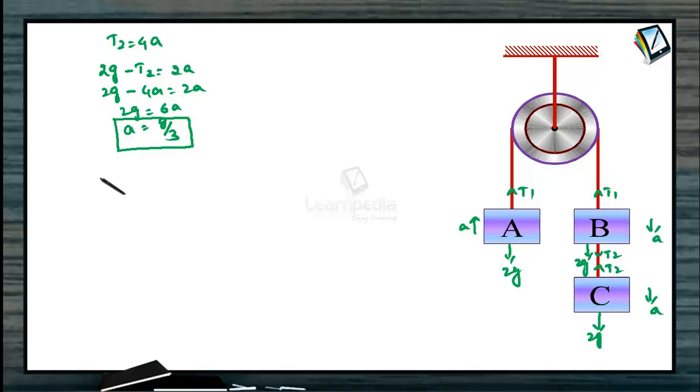Immediately we can get the value of T1, T2, T3. So, when A is equal to g by 3, substituting here, Tension T2 will be 4 times g by 3. So, the answer will be 4 into g. Suppose 9.8 meter per second square, divided by 3. Approximately 13 Newton.